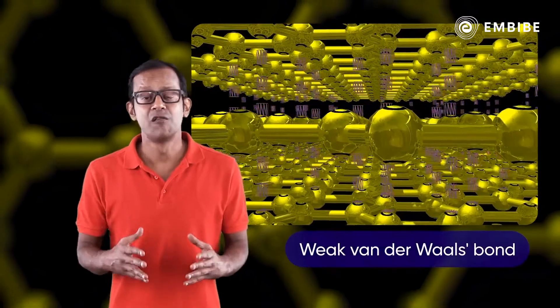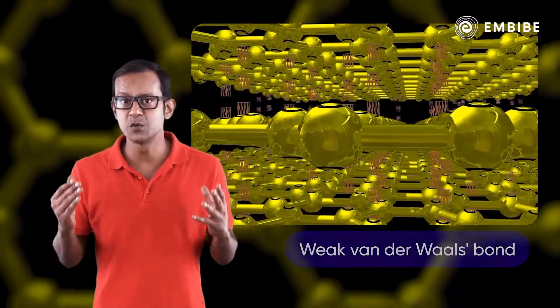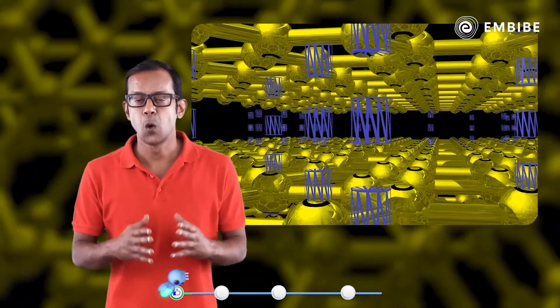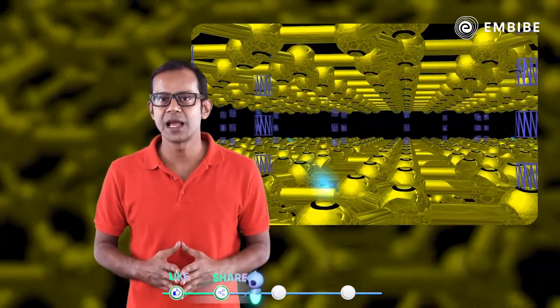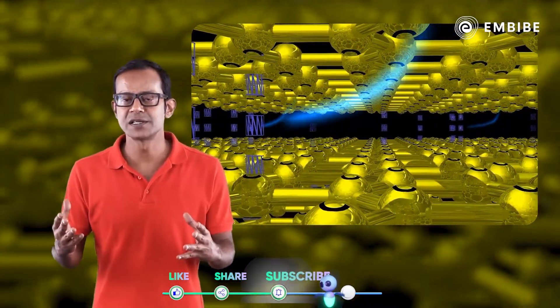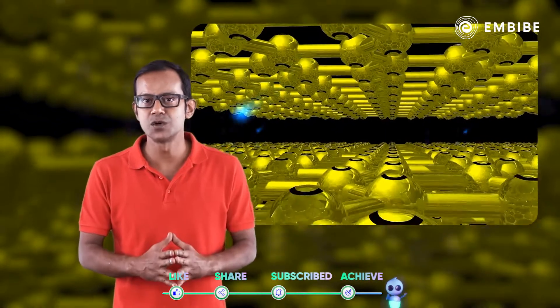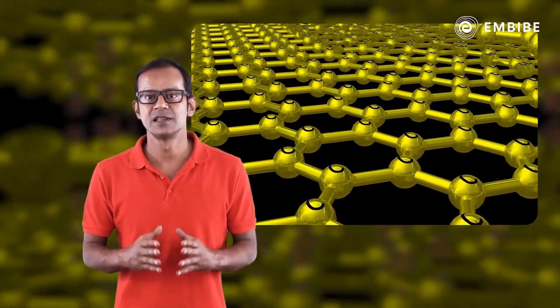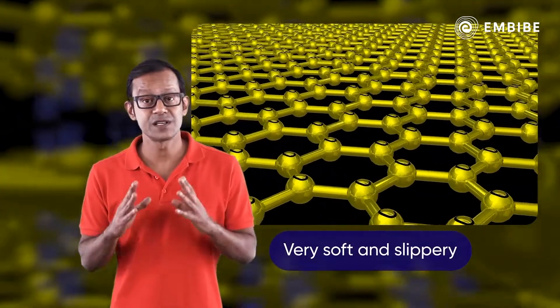There are weak van der Waals bonds between these layers. When an external force is applied, the van der Waals bonds cannot withstand the force and one layer slides over the other layers. This makes graphite very soft and slippery.